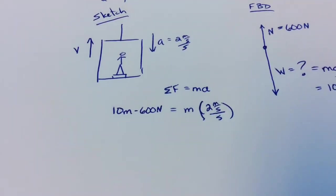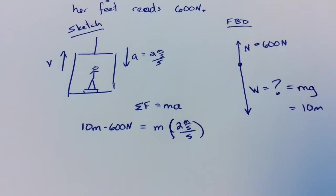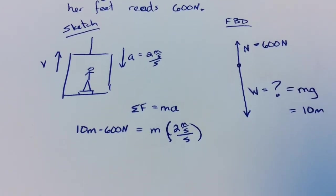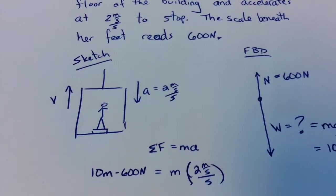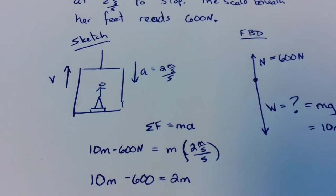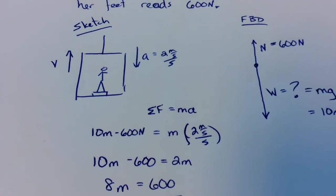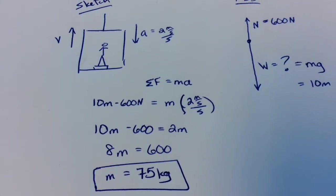So weight is 10m and you can put that into the equation now. So on the left hand side of that equation, 10m, which is the weight, minus 600 newtons is equal to the mass unknown times 2 meters per second every second. So get rid of the units and just take a look at that thing. 10m minus 600 is equal to 2m. Gather the like terms and there's your answer. Our mass is 75 kilograms.